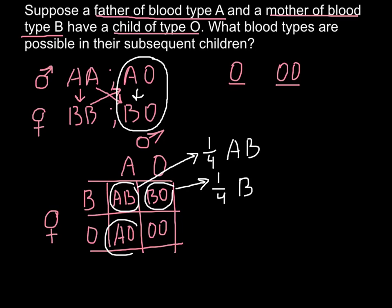And they would also have one-fourth chances to have blood type A, because blood type AO would produce blood type A phenotypically.